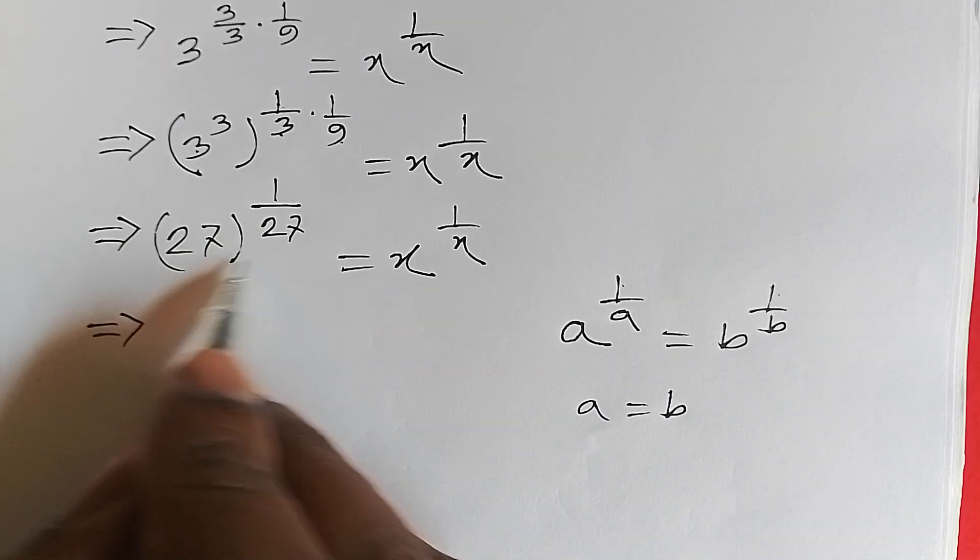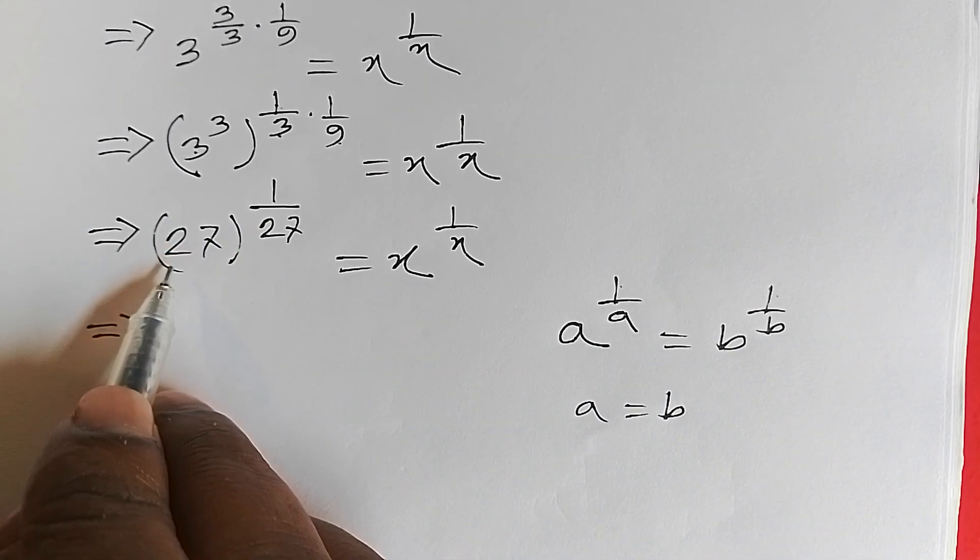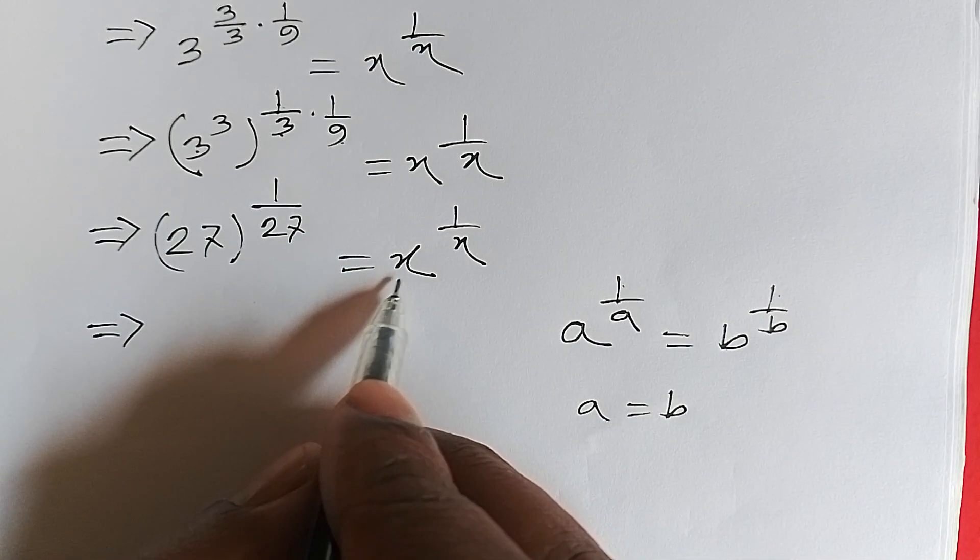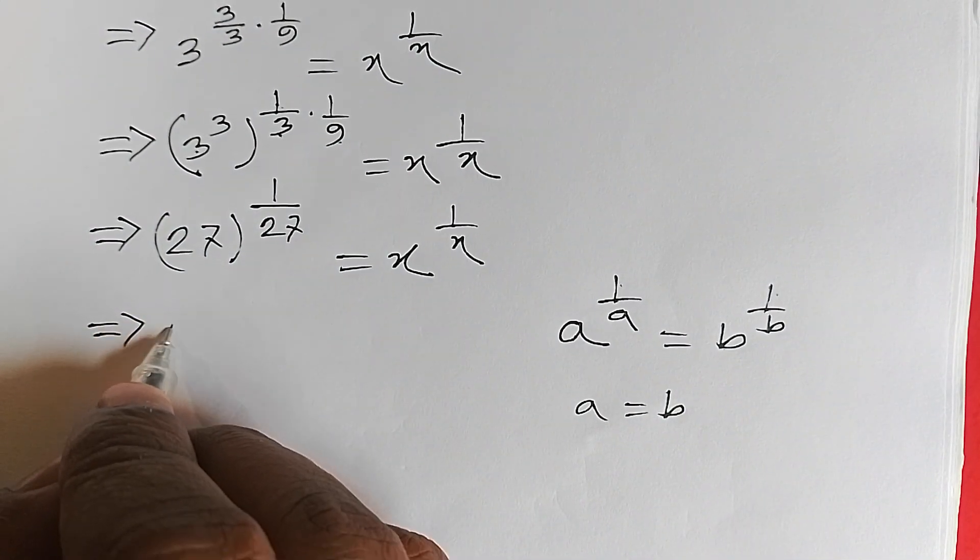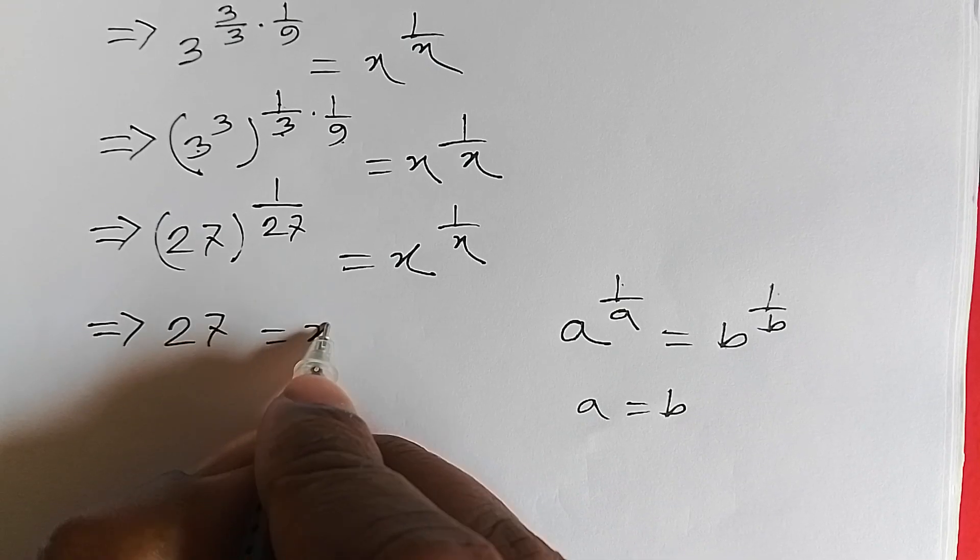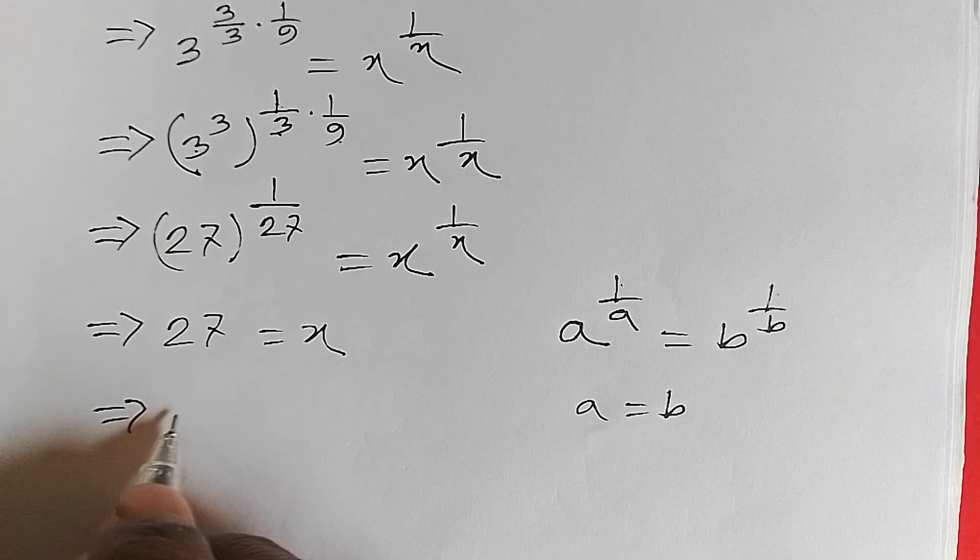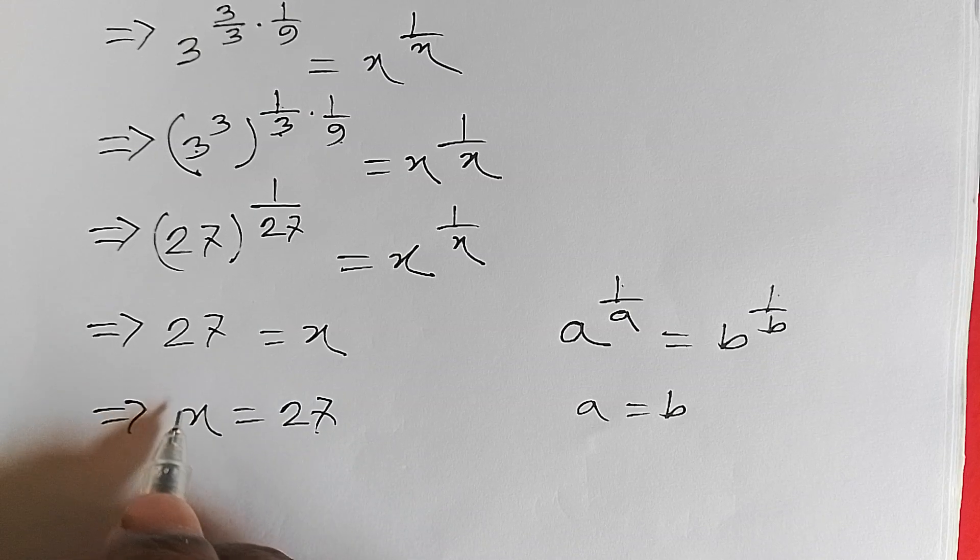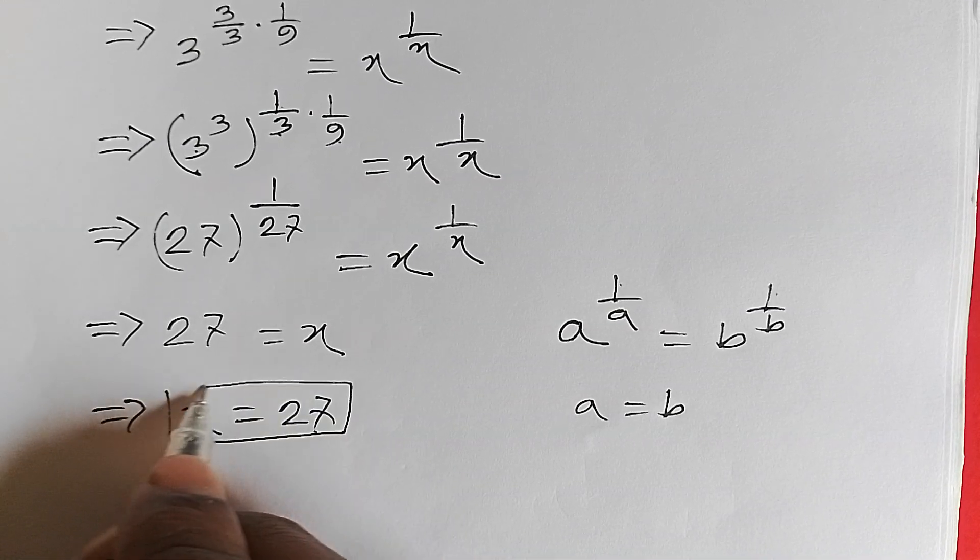We can write: A equals 27 and B equals x. So we can write 27 equals x, or x equals 27. And that is our final answer.